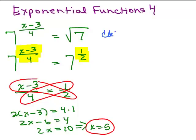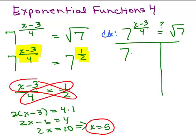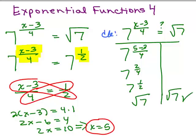You should check it. So the question is, the original problem, 7 to the x minus 3 over 4, is that going to really equal the square root of 7? So if I put in 5 for x, that's the question. So you could just do over on the left-hand side, putting in 5 for x, 5 minus 3 over 4 is 2 fourths, which is 7 to the 1 half. And 7 to the 1 half, yes, that's the same thing as the square root of 7. So it does check.